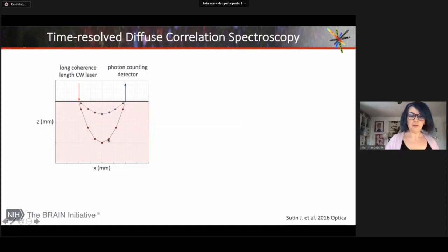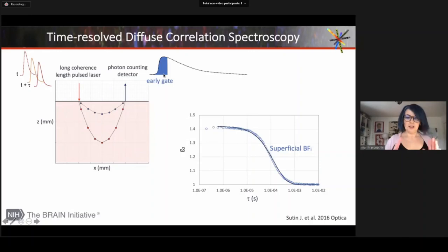A few years ago, we introduced time domain diffuse correlation spectroscopy. We use narrow pulses and photon counting detectors that can detect the arrival time of the photon and generate the TPSF. From that, if we choose early arriving photons, looking at an early gate, we can get superficial blood flow. And looking at late photons, we can go deeper.